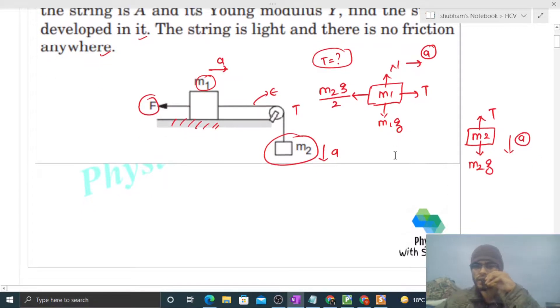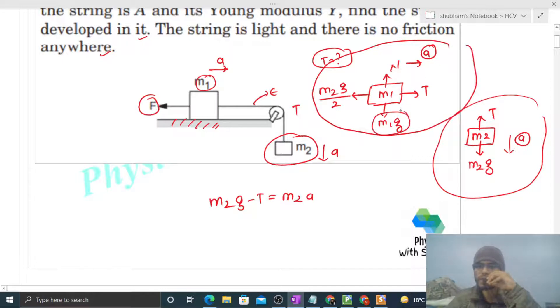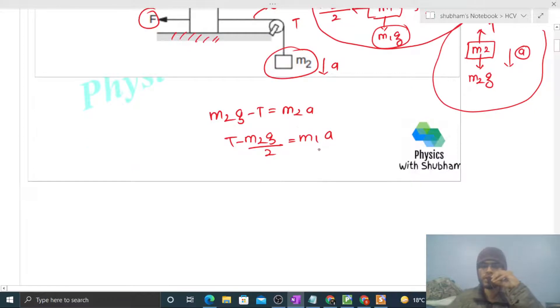Now we can write the equation F equals ma. For m2, it will be m2g minus tension equals m2a. And for m1, m1g will balance with normal reaction, so T minus m2g divided by 2 equals m1 into a.